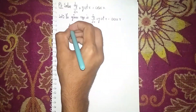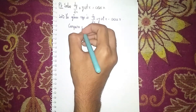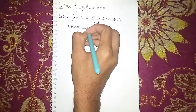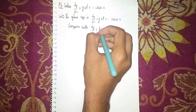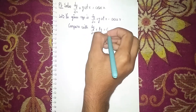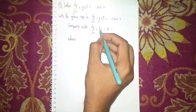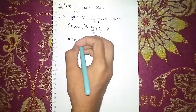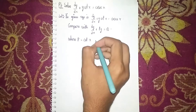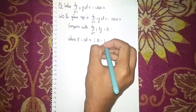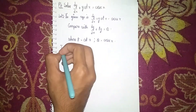Now compare this equation with the standard form dy/dx plus Py equals Q, where here P is cot(x) and Q is cosec(x).